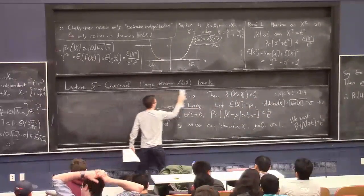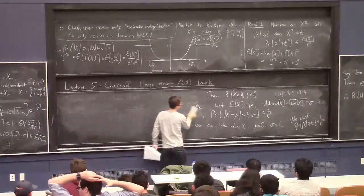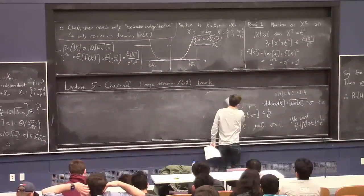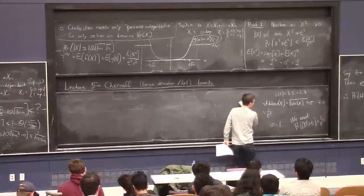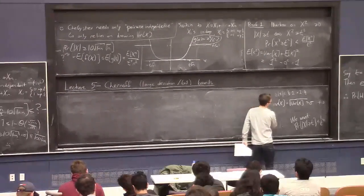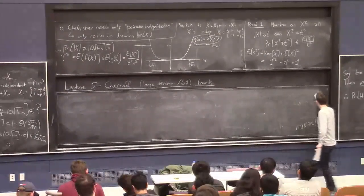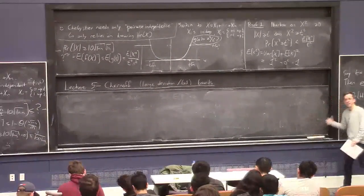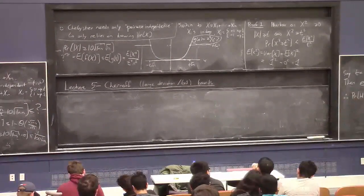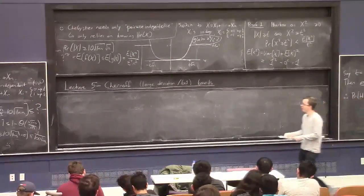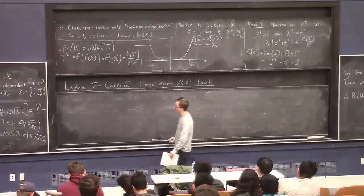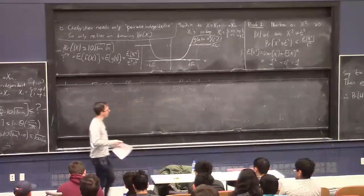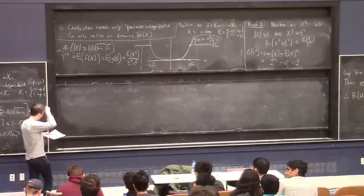What I'm doing right now is sometimes called the fourth moment method. You can use this to get better bounds even than Chebyshev when you can heroically compute the expected value of x to the fourth. I'll show you a slicker way to do some of these computations when we study analysis of Boolean functions, but I'll do it the non-slick way right now.